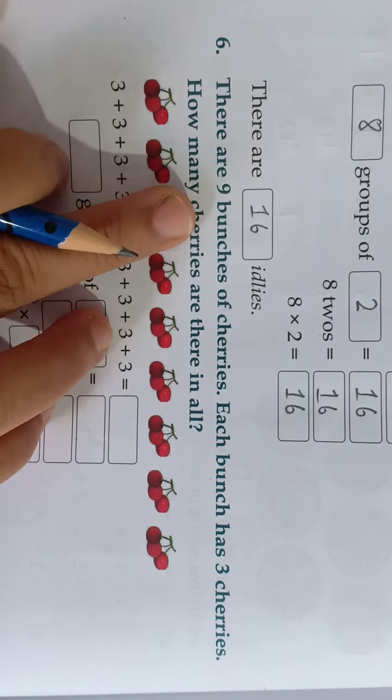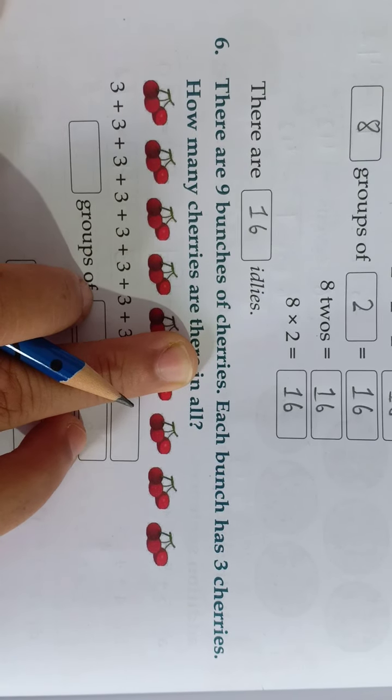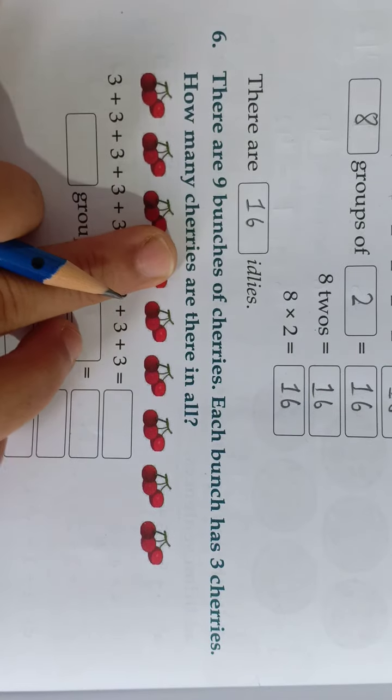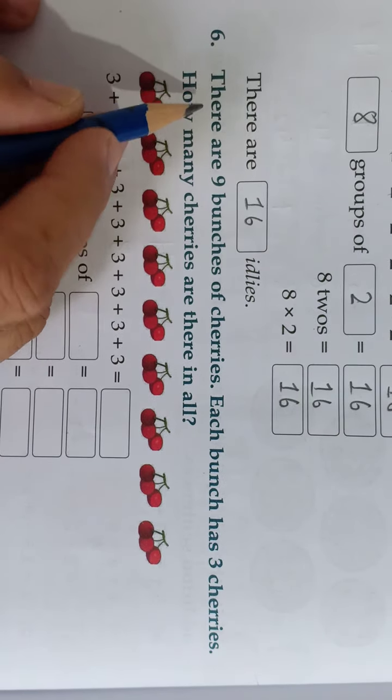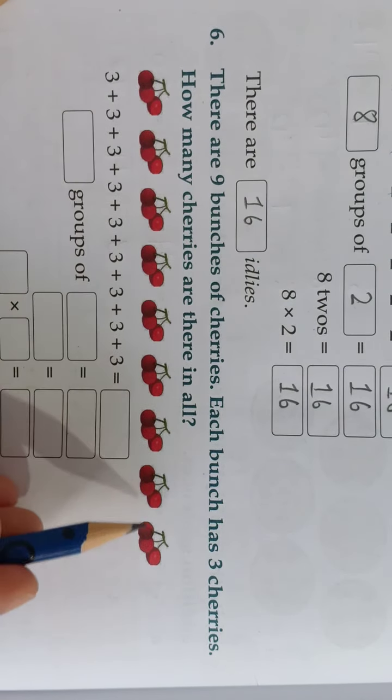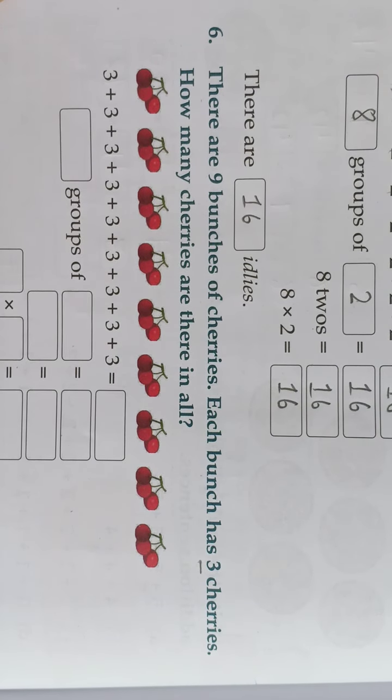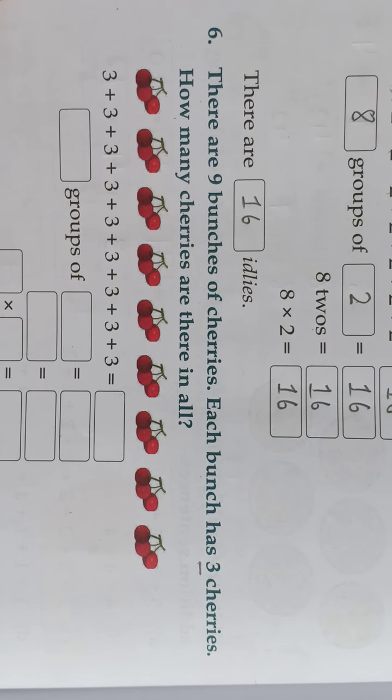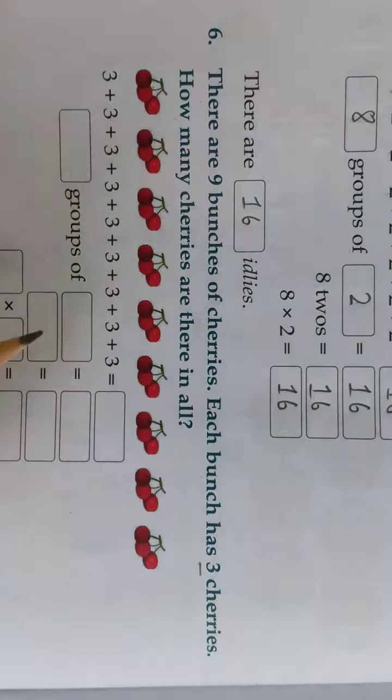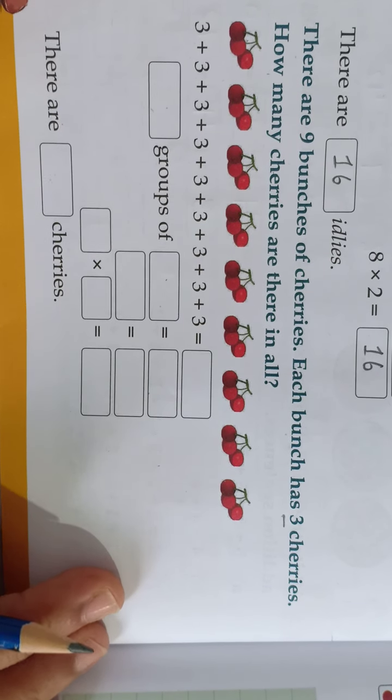Let's move to number 6. I will only read for you. You have to do yourself. So what is this? There are 9 bunches of cherries. Each bunch has 3 cherries. How many cherries are there in all? Same way you have to do this. Addition, then you will write how many groups, how many cherries. And this way you will get your answer. Same here, how many cherries are there in all, you will write here. Okay, so this will be your homework, page number 88.